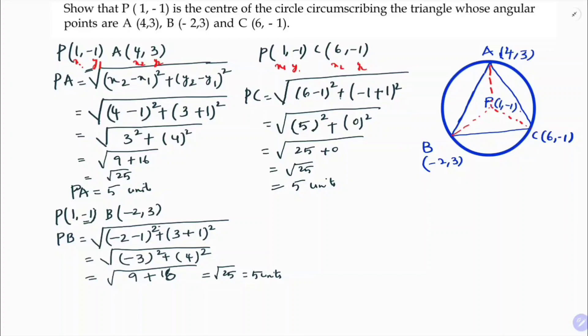So we have shown that PA = PB = PC = 5 units. All distances are equal to the radius. Therefore, A, B, C are the angular points of a triangle circumscribed by the circle centered at P(1, -1). We just needed to prove PA = PB = PC.